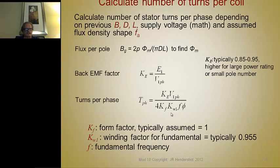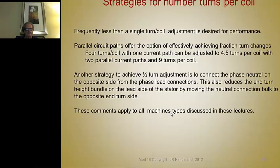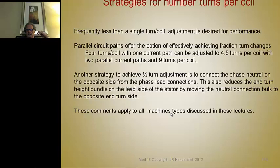Here's the formula to calculate the flux per pole — from that you calculate the turns per coil. There's sometimes difficulty in picking the right number of turns, so here are some strategies. Sometimes less than a single turn per coil is required, so parallel circuit paths can be effectively used. For example, if you've calculated you need four and a half turns per coil, but you can only put in four or five if all the coils are in series, using two parallel paths with nine turns per coil is effectively like four and a half turns.